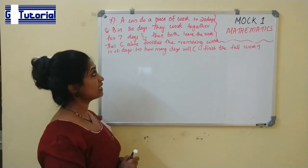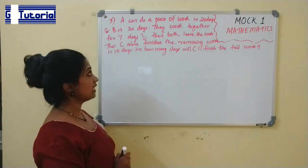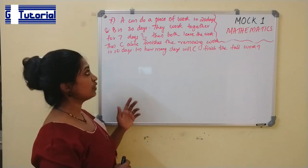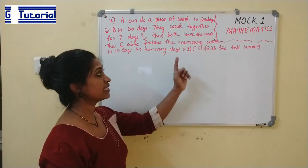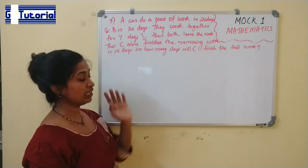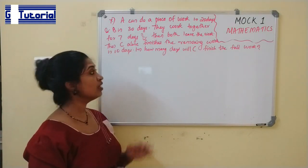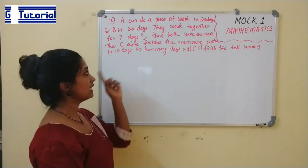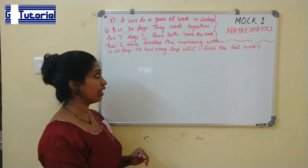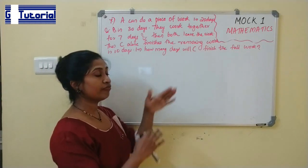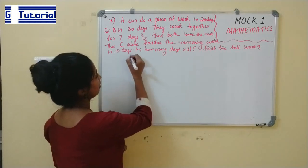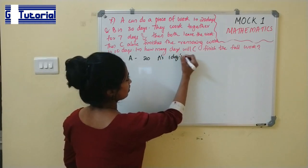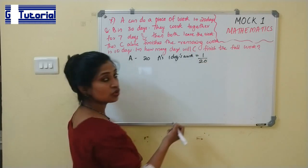Next question: A can do a piece of work in 20 days, B in 30 days. They work together for 7 days and then both leave. C alone finishes the remaining work in 10 days. In how many days will C finish the full work? A's 1 day's work = 1/20, B's 1 day's work = 1/30.